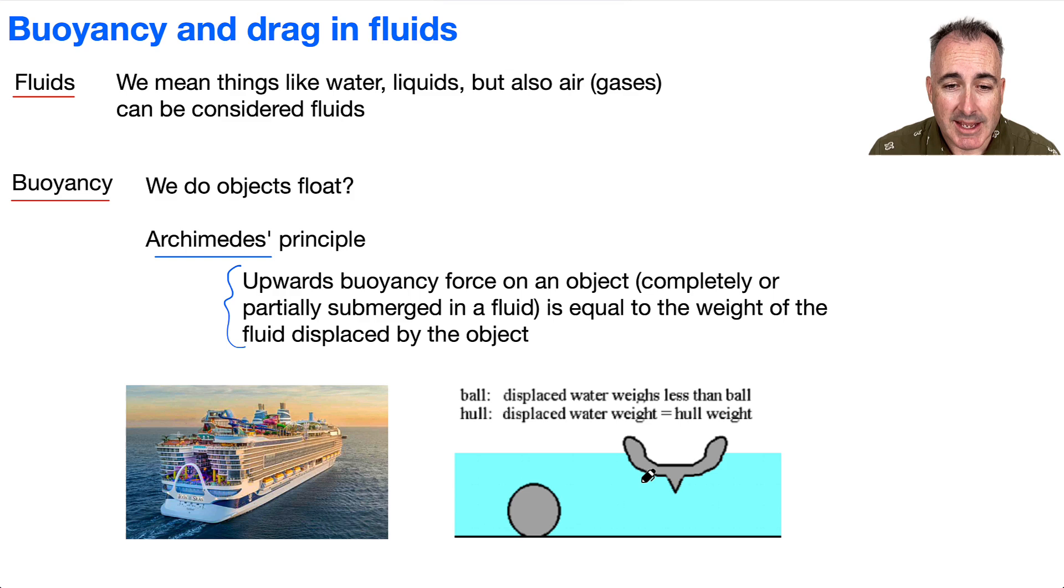If I displaced enough water to equal the force of gravity on the object, it would float. It would be buoyant. Looking at this diagram, imagine you had the same amount of material—a metal ball. If you put it in water, it sinks. Not because it's too heavy, but because it doesn't have enough surface area to displace enough water to equal its weight.